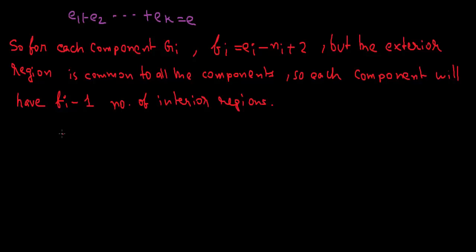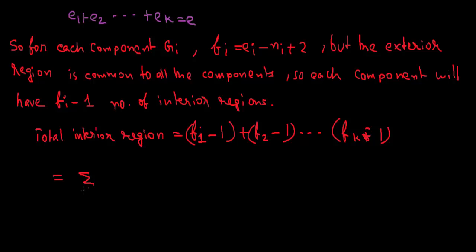The total interior region will be equals to F1 minus 1 plus and so on up to FK minus 1. Taking summation i from 1 to K, Fi minus 1, we can write this as summation Fi minus K.